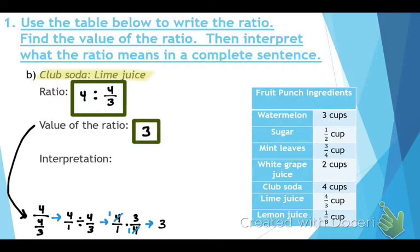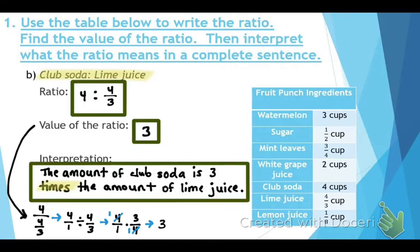For the interpretation: 'The amount of club soda is three the amount of lime juice' needs one extra word. Since the value is a whole number, we say 'three times.' The correct interpretation is: the amount of club soda is three times the amount of lime juice.